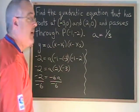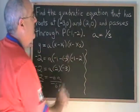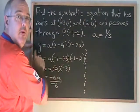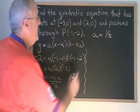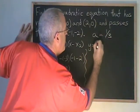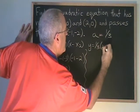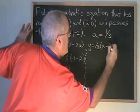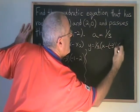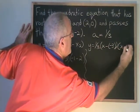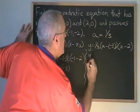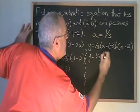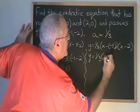Now we plug our a value and our roots into the form again, and we leave the y and the x in place. x minus negative 3 is x plus 3.